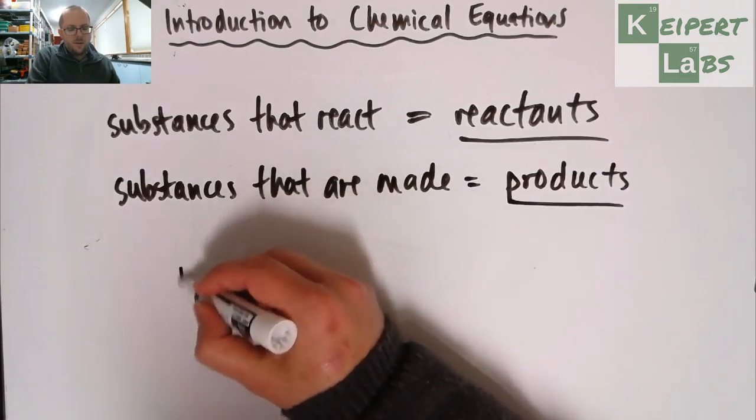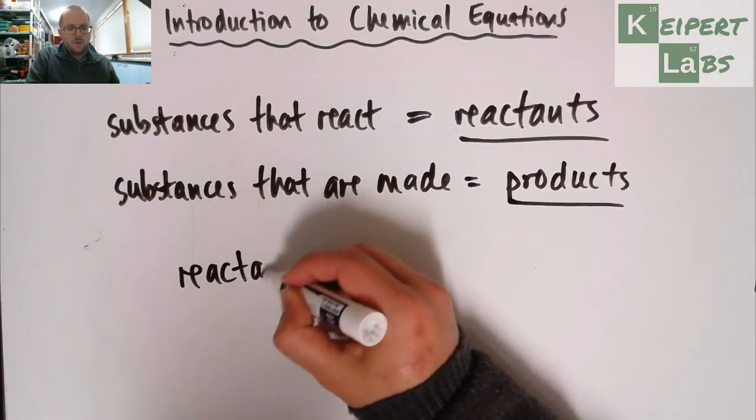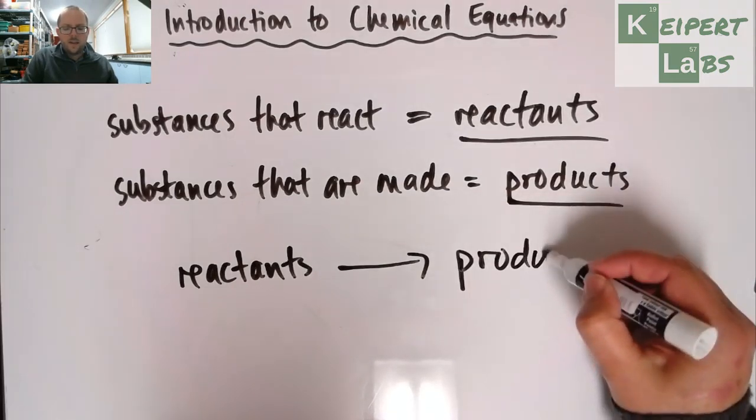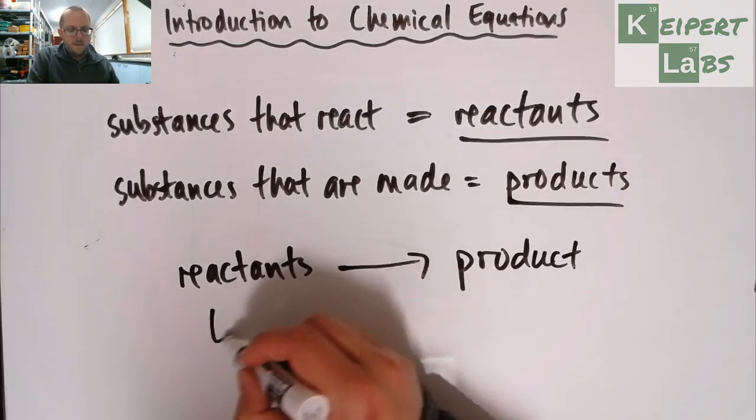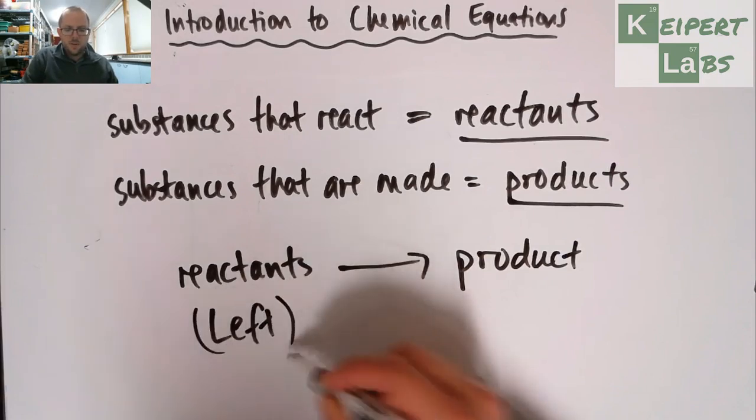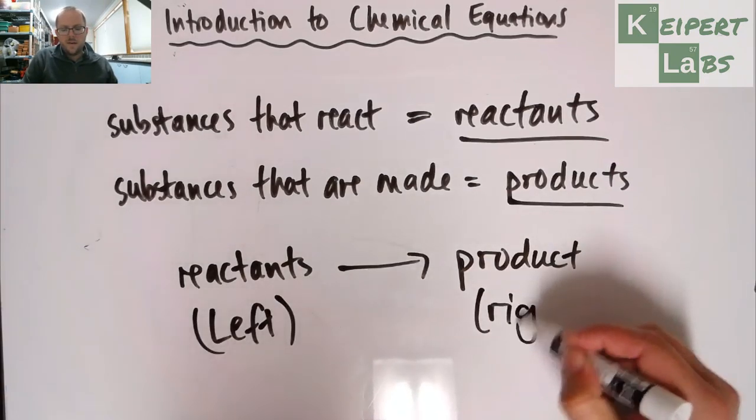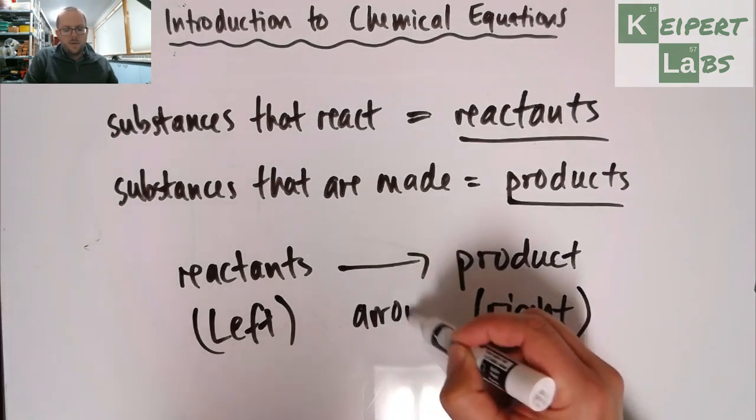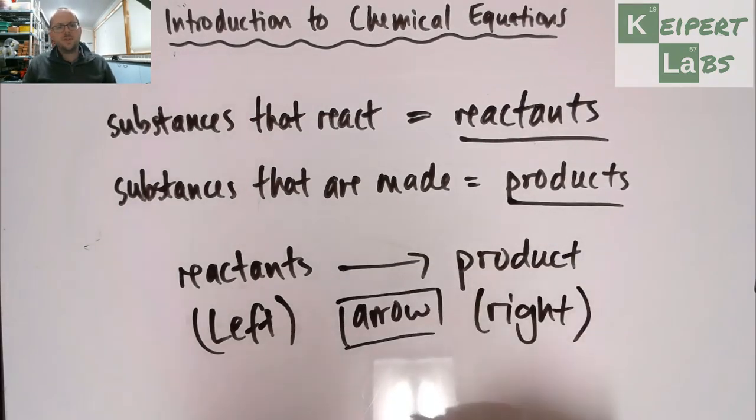So we always go, when we're looking at a chemical equation, reactants are always on the left, and products are always on the right. And we use an arrow. I told you that we'd never see an equal sign, because for us as chemists, the arrow is what signifies the fact that we have changed.